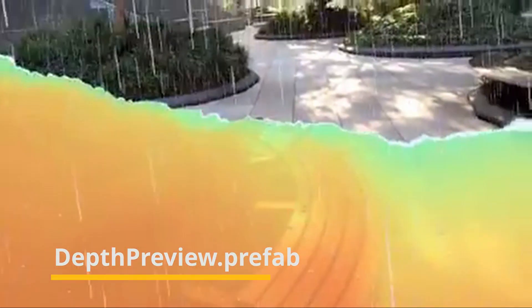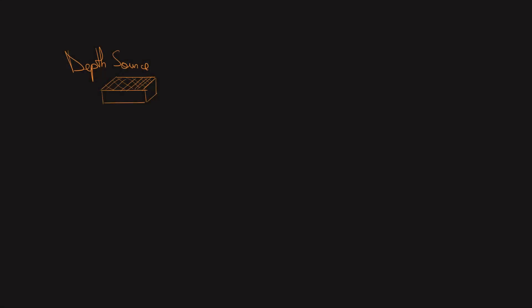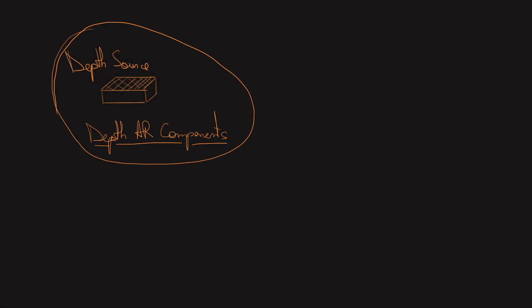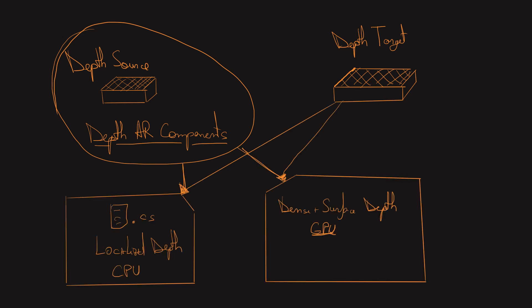If you want to debug what's happening, you can simply parent the depth preview prefab to your camera. In order for your projects to work, you need at least a depth source component, but it's easier to drag and drop the Depth AR Components prefab, and you also need at least one depth target component. Since you work with so many pixels to get the depth, many times you will need to do the calculations on GPU, and that's what DepthLab does sometimes using classic shaders or compute shaders.